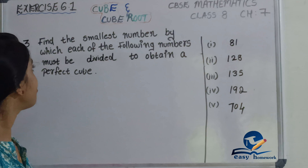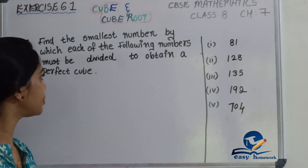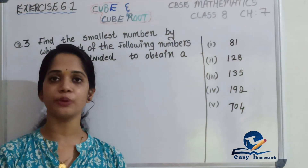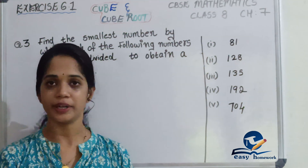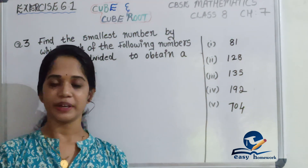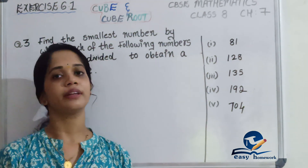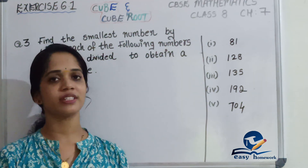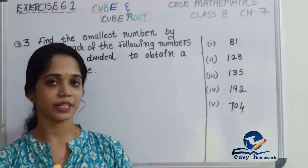This is the final question: Find the smallest number by which each of the following numbers must be divided to obtain a perfect cube. We will discuss class 8 mathematics, and we will discuss the theory portion in the description box.